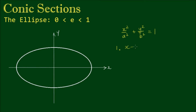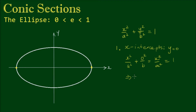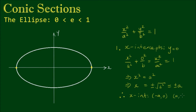Firstly, let's determine the x-intercepts. These are the points where the ellipse crosses the x-axis, which occur when y is equal to 0. From the equation of the ellipse, we have x squared on a squared plus 0 squared on b squared, which equals 1. This implies that x squared is equal to a squared, which means that x is equal to positive or negative a. So the x-intercepts are at (-a, 0) and (a, 0).